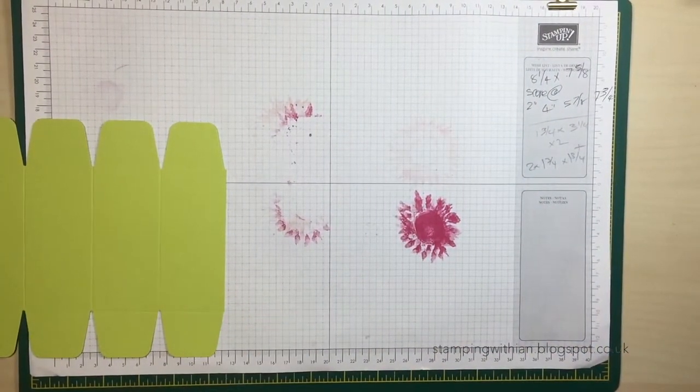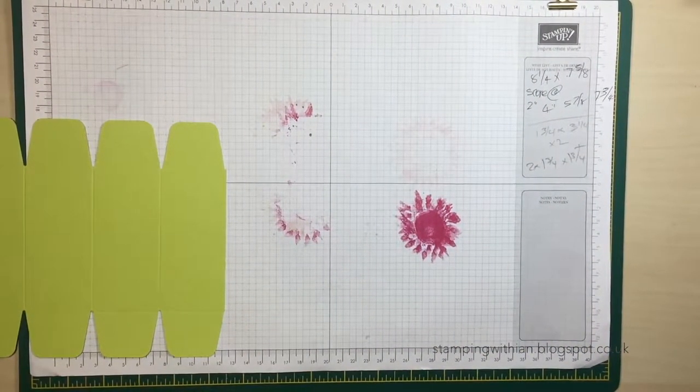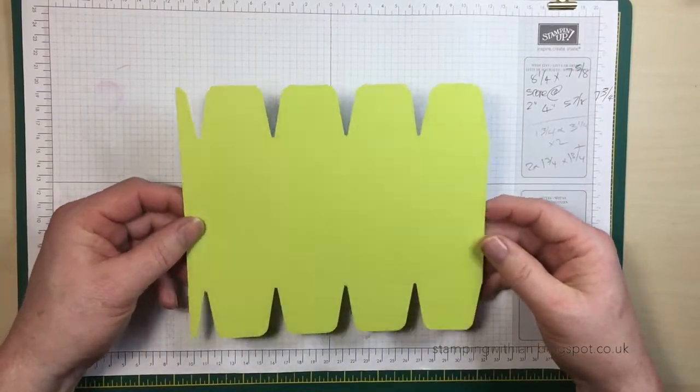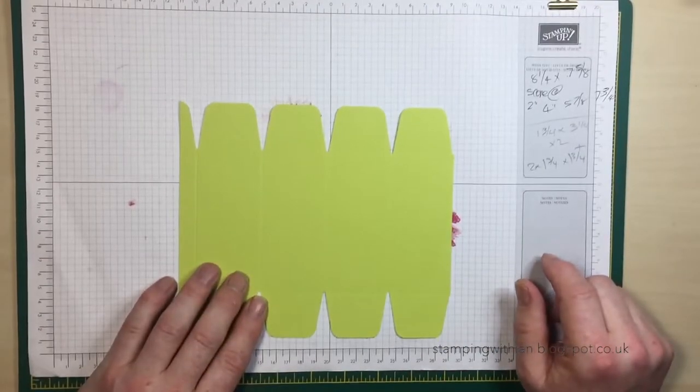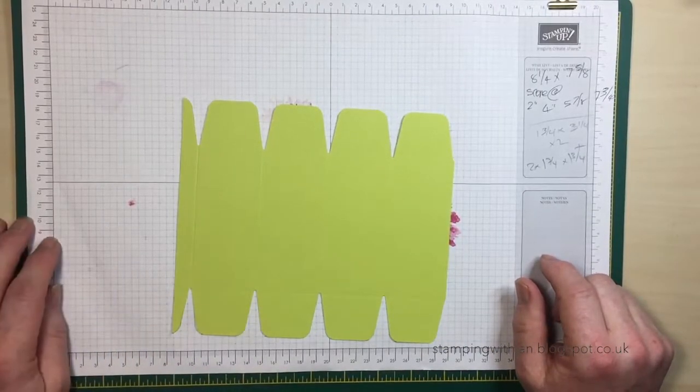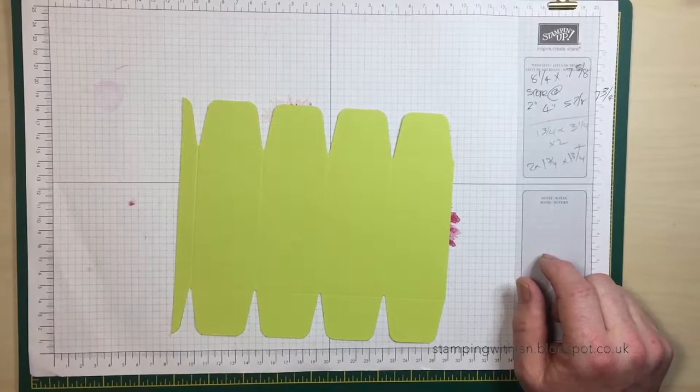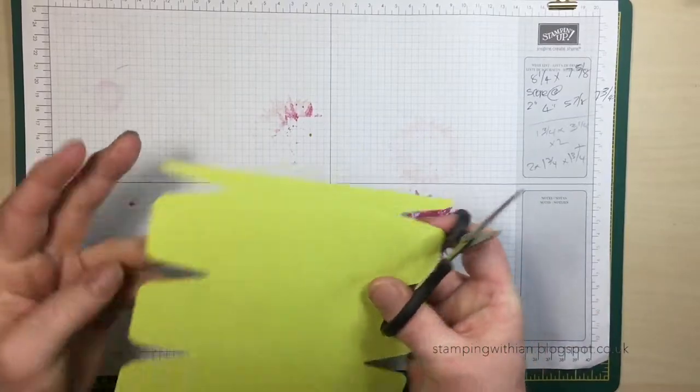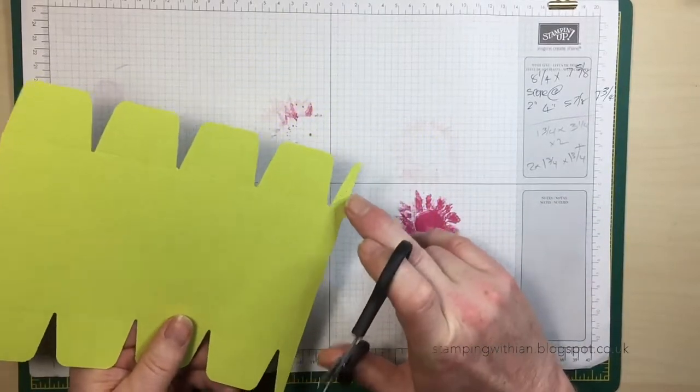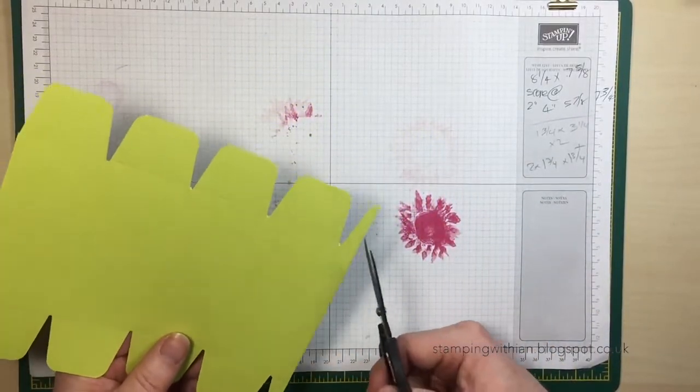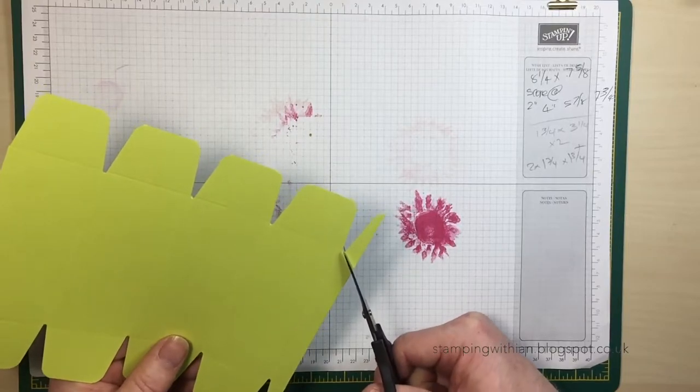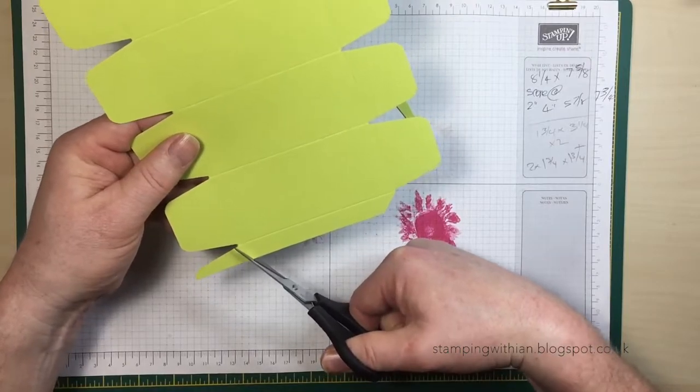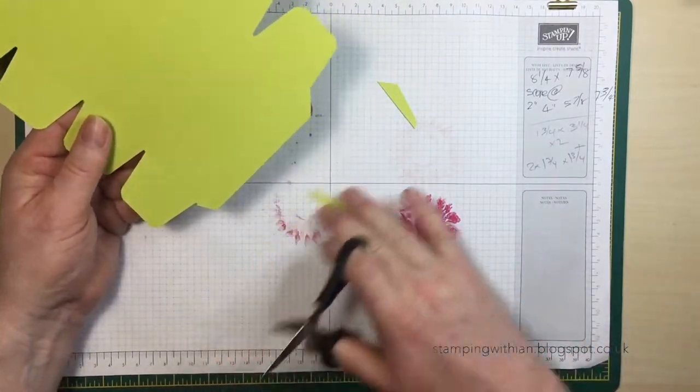The next thing we're going to do is take our paper snips and we're going to cut off these two ends here. So just make a nice little diagonal up to there, like so.